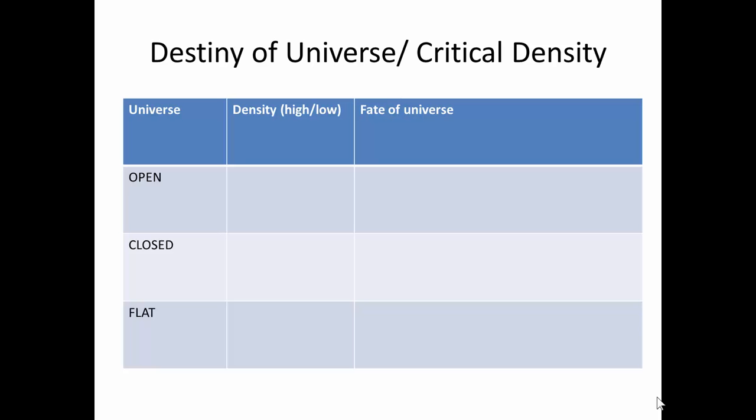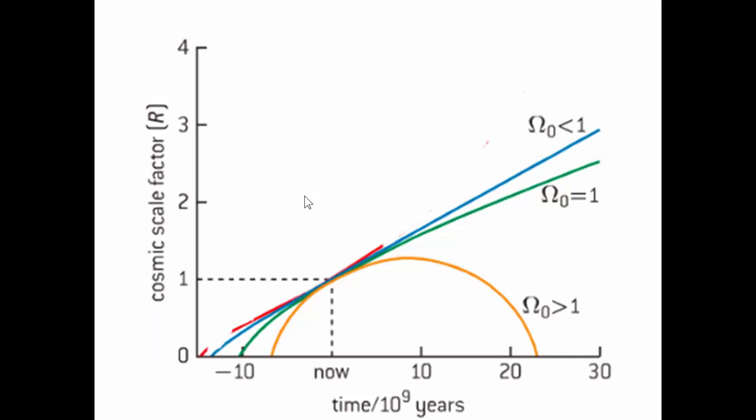The destiny of the universe. We need to look at the possible outcomes to the fate of the universe. And it was all basically believed to hinge on this thing called the critical density. These are the outcomes of the universe.